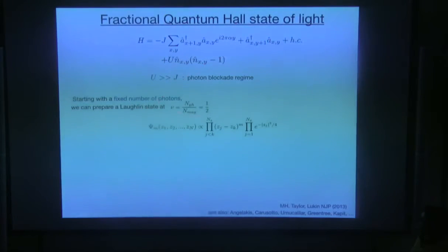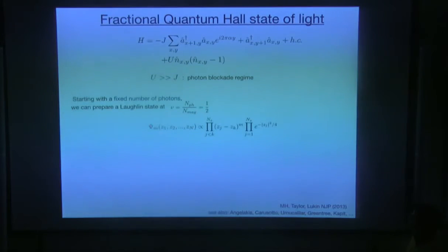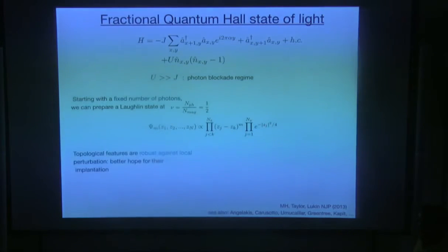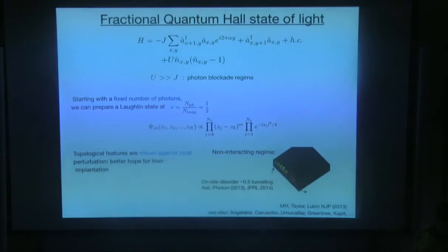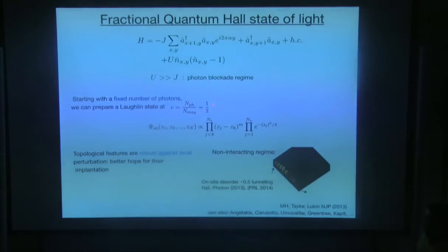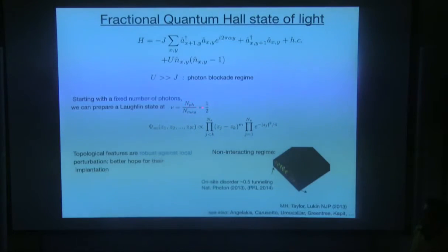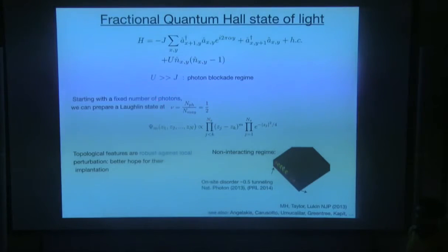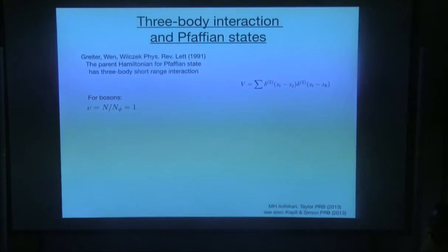This is very similar to the Bose-Hubbard Hamiltonian that was looked at a long time ago for bosons in optical lattices — it's exactly the same. But there are some very fundamental differences. We expect that for this Hamiltonian, when the filling factor is one-half and alpha is smaller than one, the ground state of the system can be characterized by the Laughlin wave function, which is a many-body entangled, non-separable state. An important point is the filling factor — we have this Laughlin state only when the number of photons is fixed with respect to the number of magnetic flux quanta. So if we want to implement it in a photonic system, we have to come up with a way to prepare this filling factor at the right position.